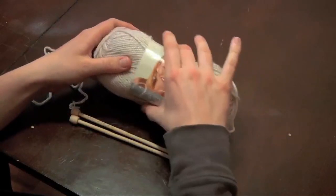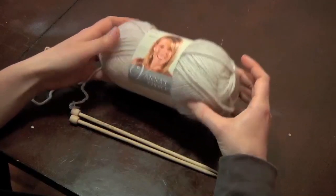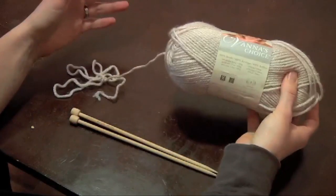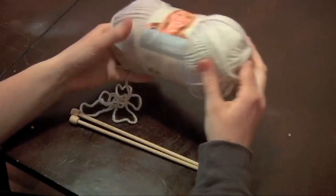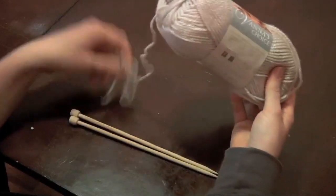Now if you have a skein of yarn that looks like this, you're going to want to pull out the end that goes from the inside. On any ball of yarn you have the end that comes from the outside and the end that comes from the inside.